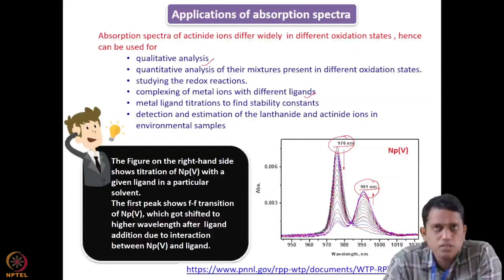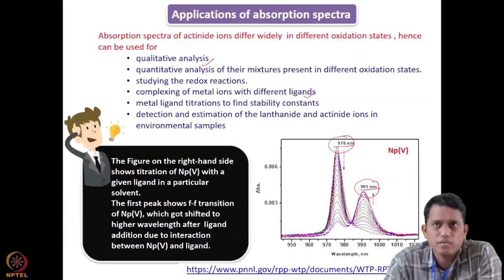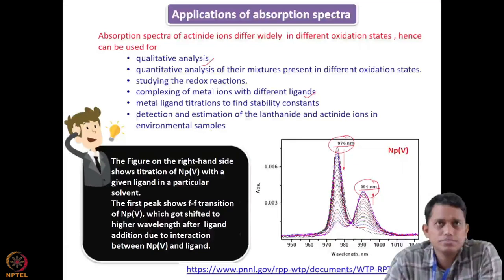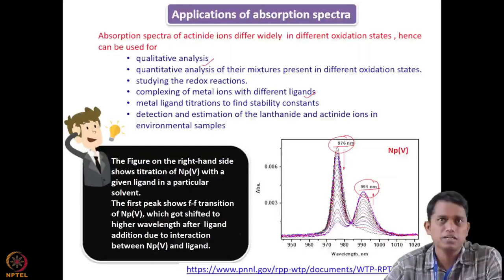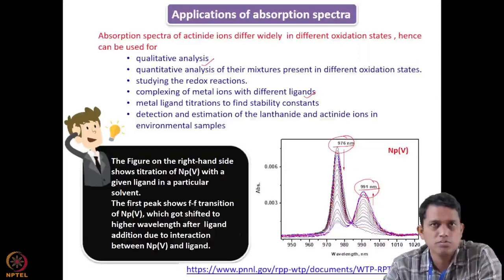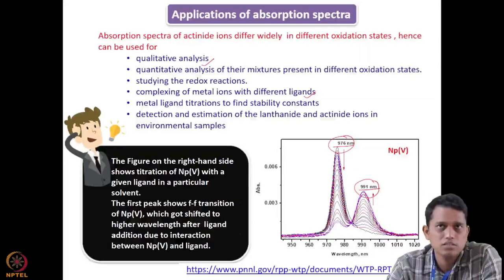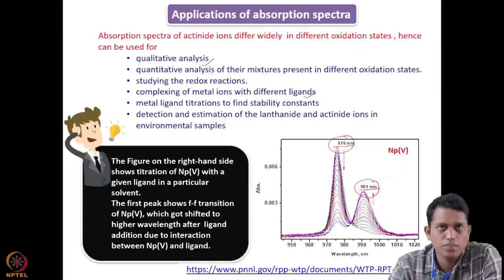By fitting the titration data using certain software — which is simply based on Beer-Lambert law — you can get an idea about the stability constant of the complex just by using spectrophotometric titration. You can also get estimation of lanthanides and actinides present in environmental samples in very small quantities. In cases where the quantity is so small, we generally prefer to use chromophoric reagents, which have very high epsilon values allowing you to go to very low concentrations.